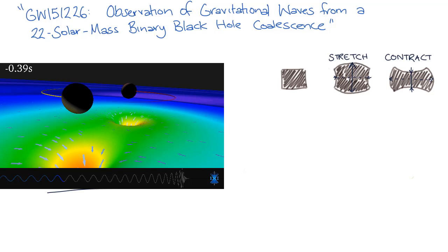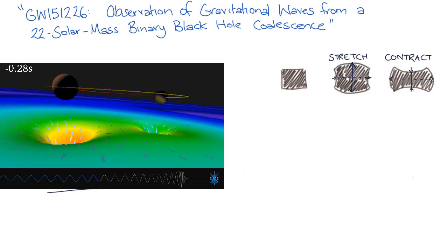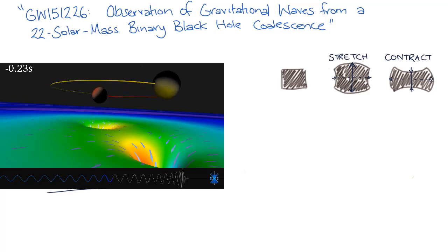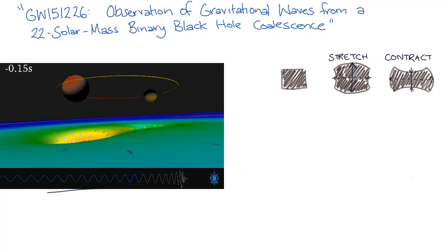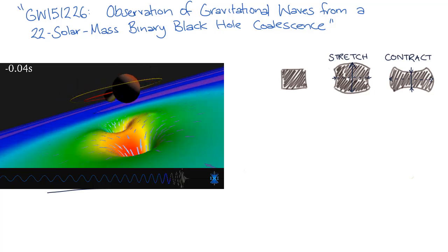However, they generate only tiny changes in space. Even extremely large masses, giving rise to the strongest gravitational wave sources, only produce gravitational waves that stretch and contract space-time by an amount far smaller than the width of an electron.